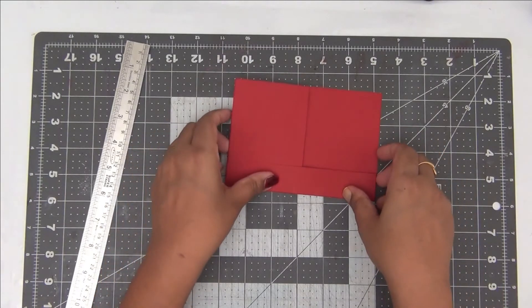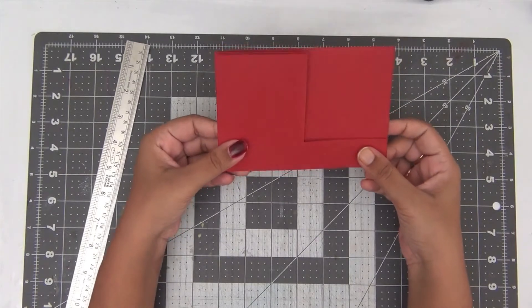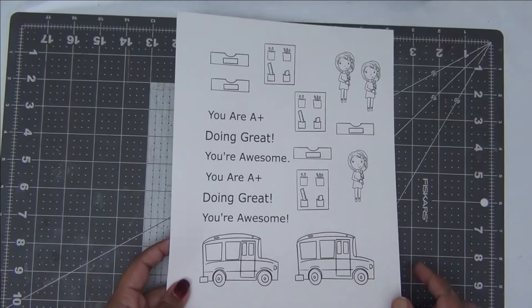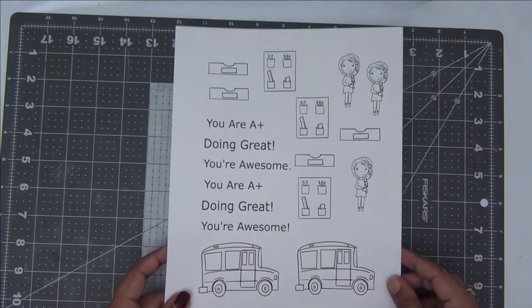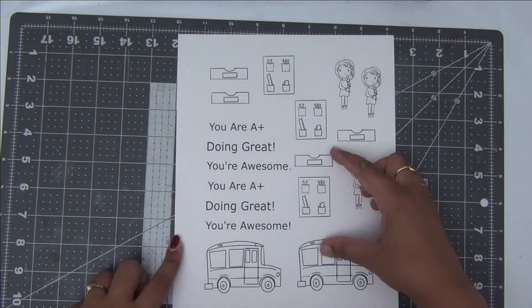So this is all you need to make your Z fold card. Just two pieces of cardstock, fold it in half and then again fold it into another half. For today's card, I am using these beautiful images from Doodle Designs and Ink. I have printed them onto an A4 sized white cardstock.